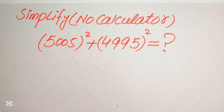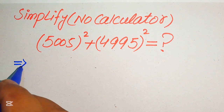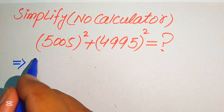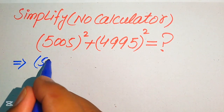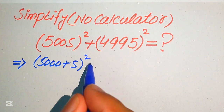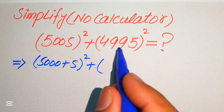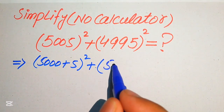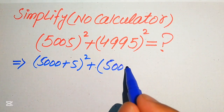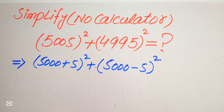First, we rewrite our algebraic expression. We write 5005 as (5000 + 5) whole square, and we rewrite 4995 as (5000 − 5) whole square. In the next step, we need to simplify these terms.